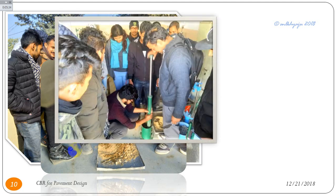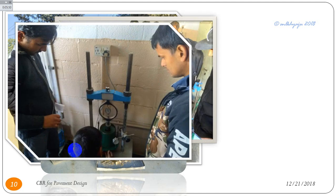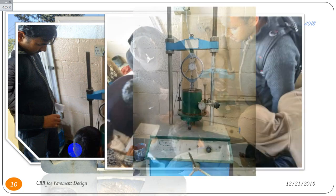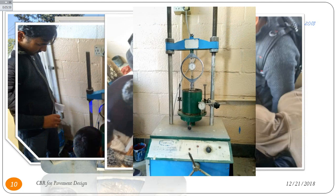In heavy compaction, the soil sample is compacted in the mold in 5 layers, and each layer is rammed with a rammer of 4.89 kg, with 56 blows per layer. This shows the assembly for the CBR test and the typical testing machine used in the lab. The key components are the penetration dial gauge, the plunger, and the proving ring dial gauge.